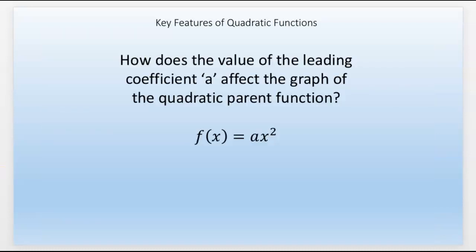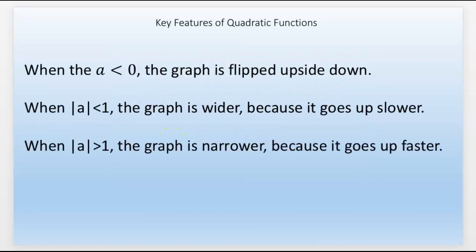How does the value of the leading coefficient a affect the graph of the quadratic parent function? That's what we're going to talk about here today. That a in front. How does it change how the parabola looks? If you remember how it worked with absolute value, when a is less than 0, it flips it upside down.